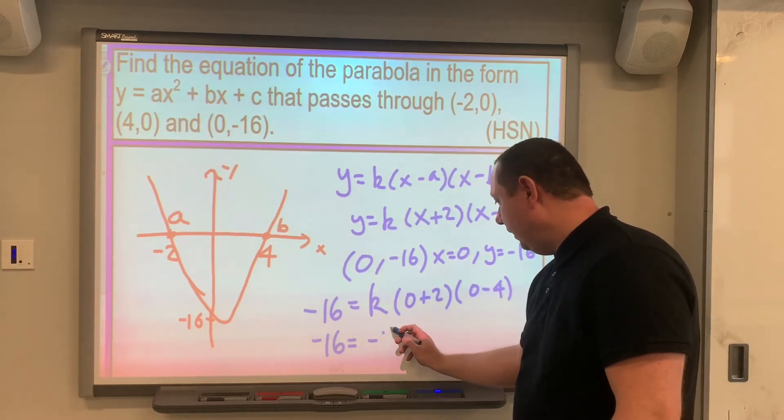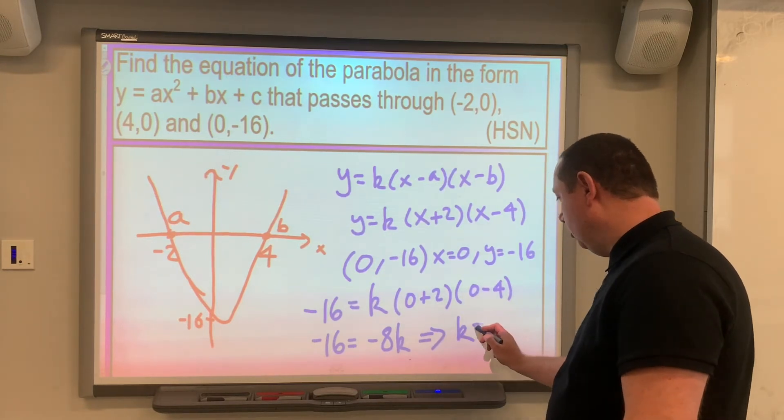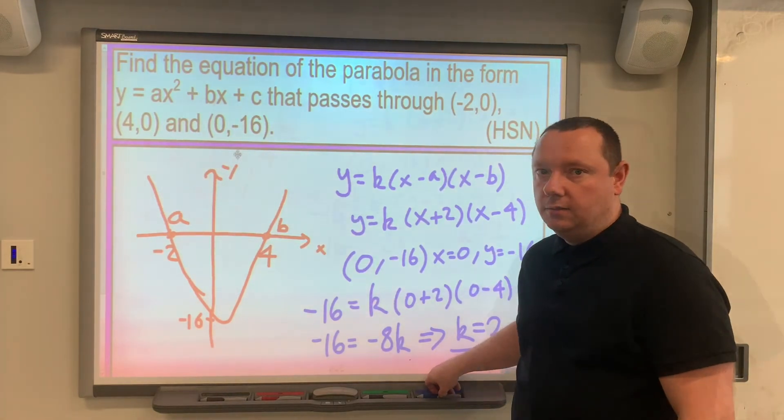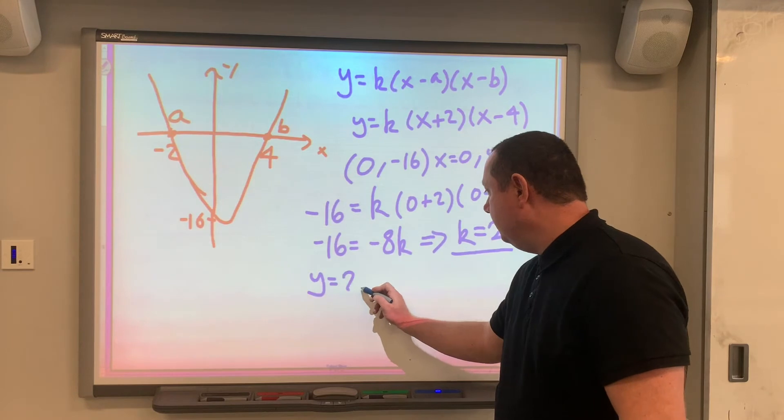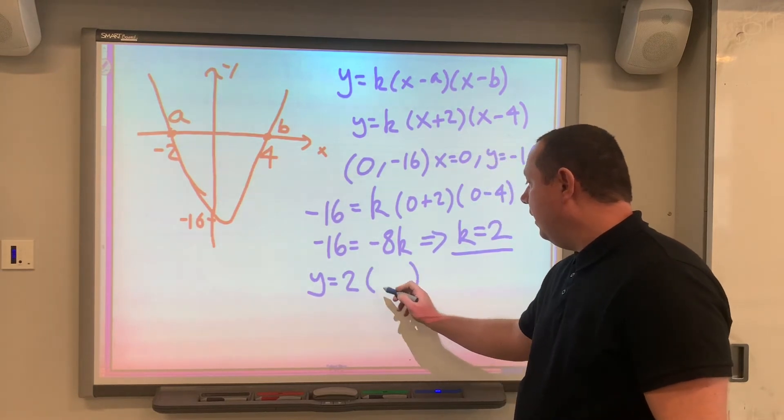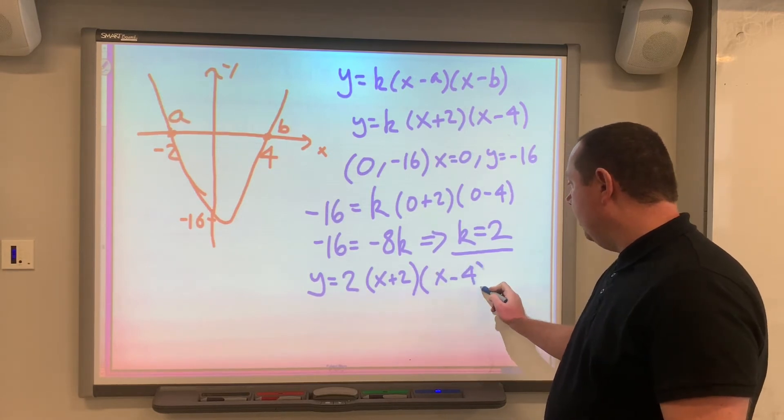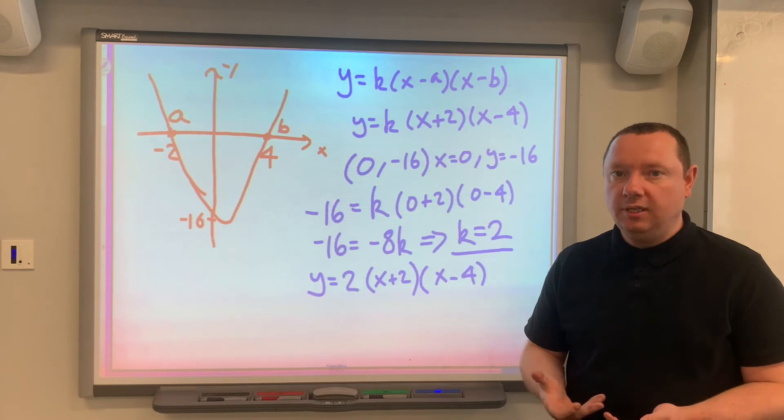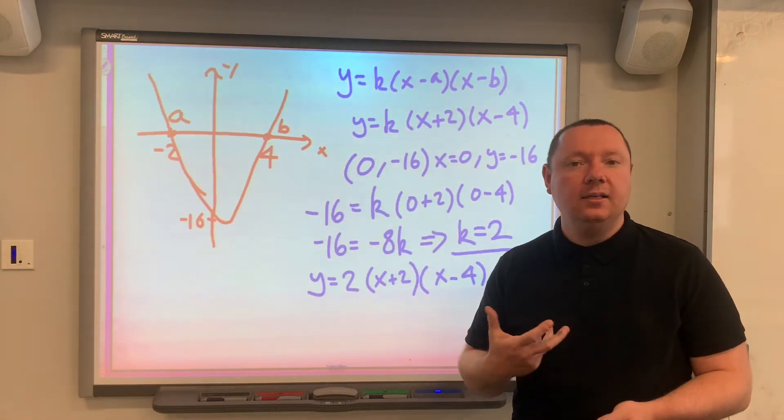So -8k, which implies that k must equal 2. Almost done. So we now know the equation is y equals 2 times (x plus 2)(x minus 4). But the original question wants it in the form ax squared plus bx plus c, so it's just asking us to multiply out the brackets and get it looking like a standard quadratic.